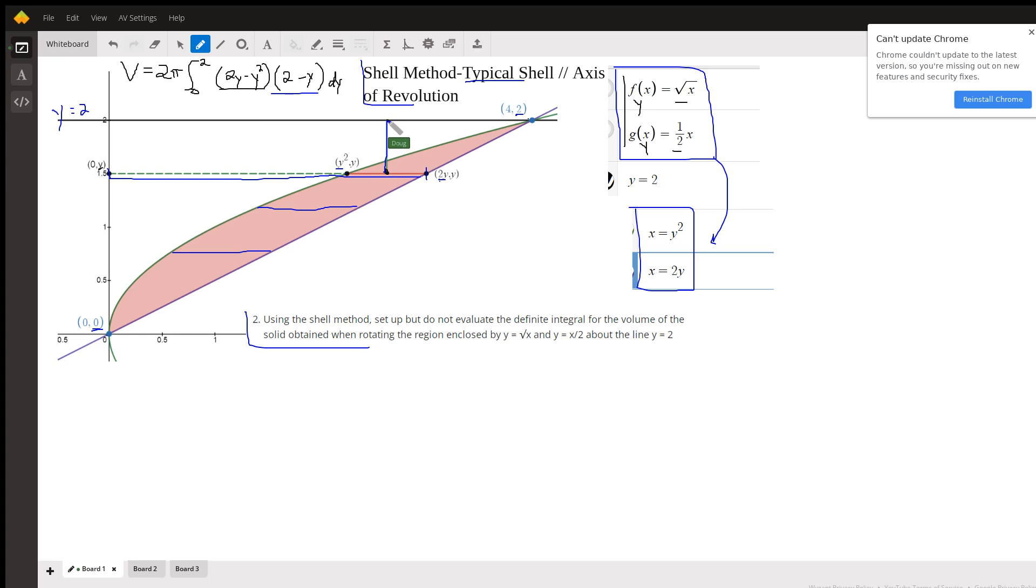That's a vertical distance, so it's the y coordinate at the top, which is always 2, minus the y coordinate at the bottom, which is just y.